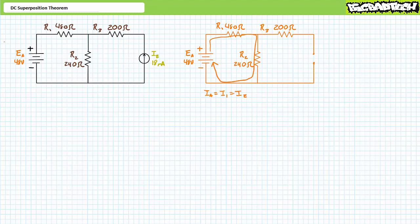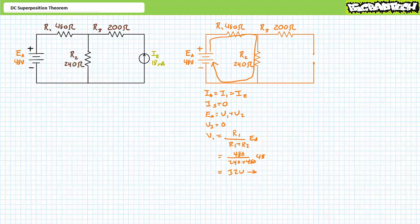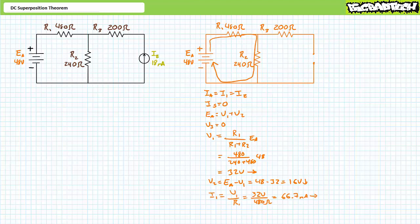A Kirchhoff's current law analysis suggests IA equals I1 which equals I2, and I3 equals 0 amps. A KVL analysis suggests EA equals V1 plus V2. Given no current travels through R3, V3 equals 0 volts. An application of the voltage divider rule demonstrates V1 equals 32 volts positive to negative left to right. An algebraic rearrangement of the KVL equation suggests V2 is the remaining 16 volts positive to negative top to bottom. Ohm's law demonstrates I1 is 66.7 milliamps traveling left to right, and I2 is also 66.7 milliamps traveling top to bottom.